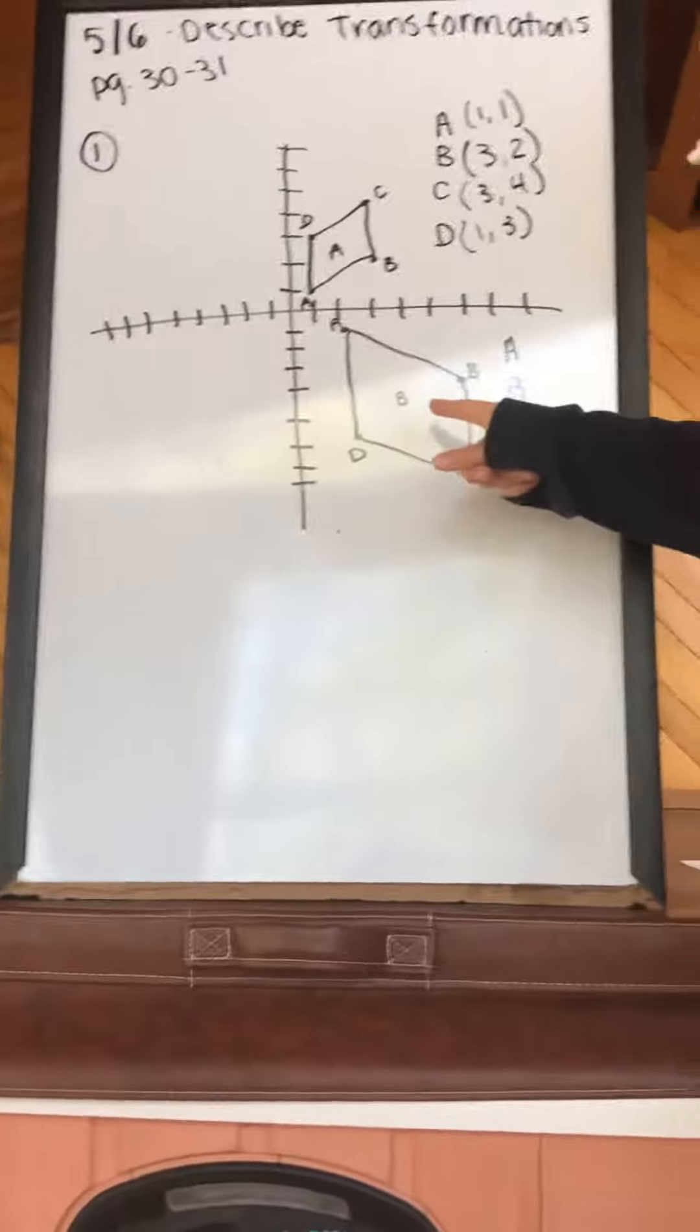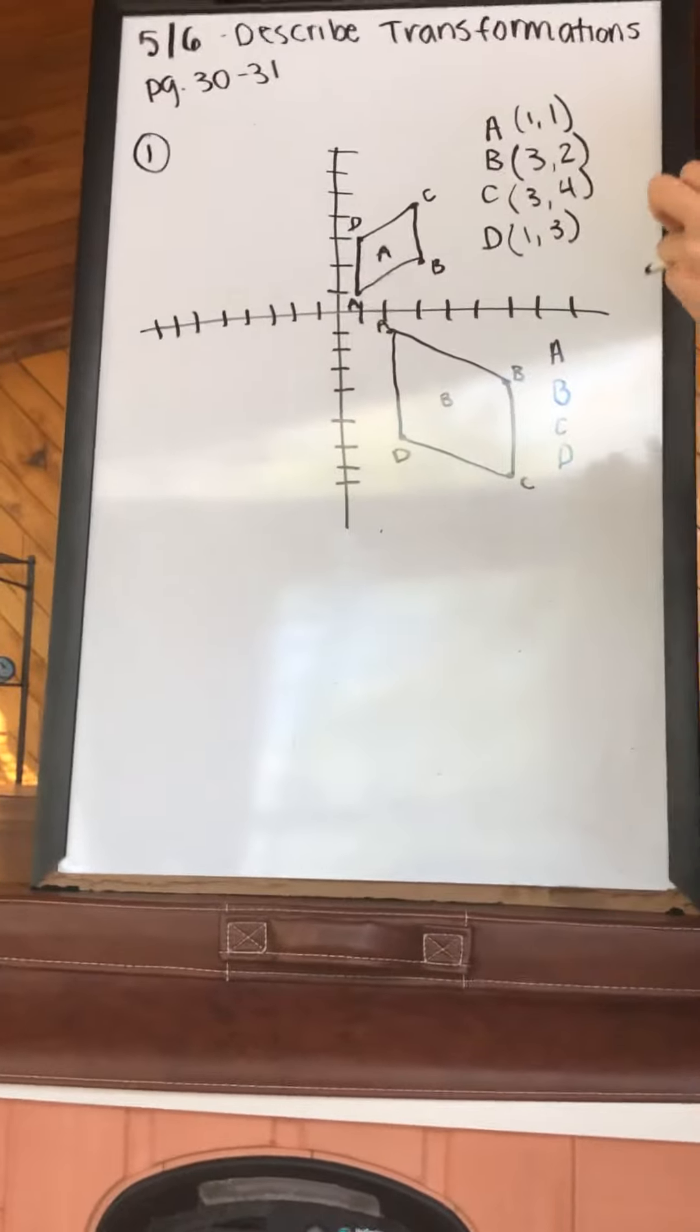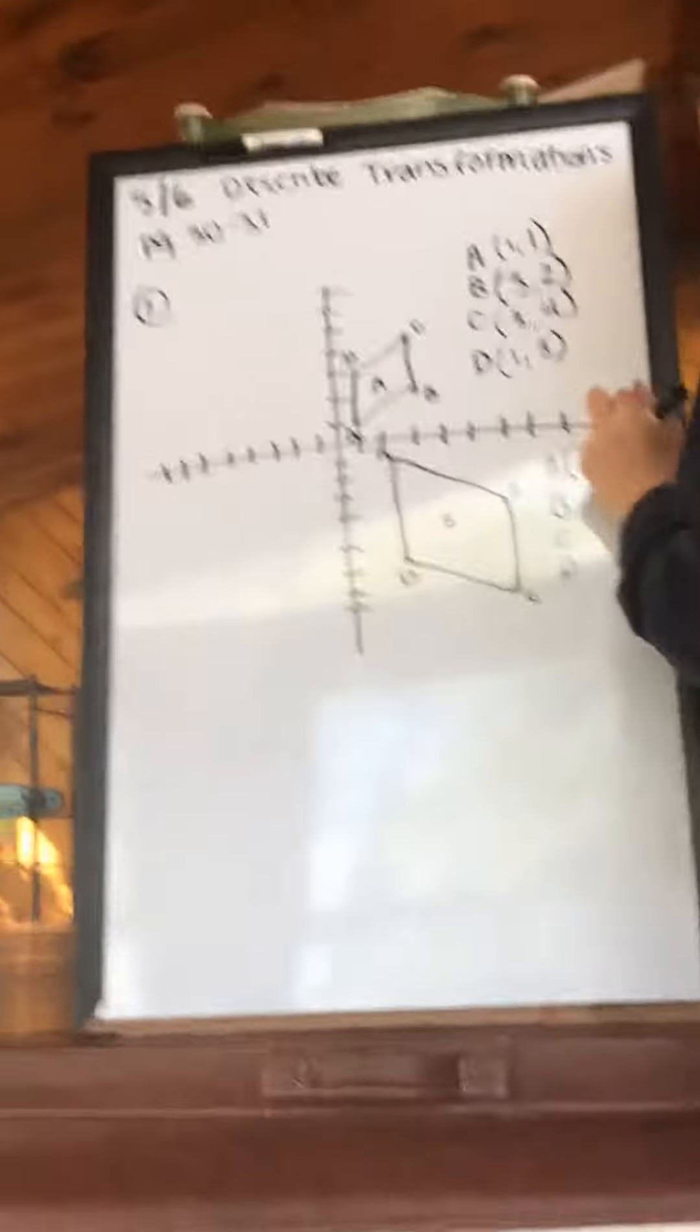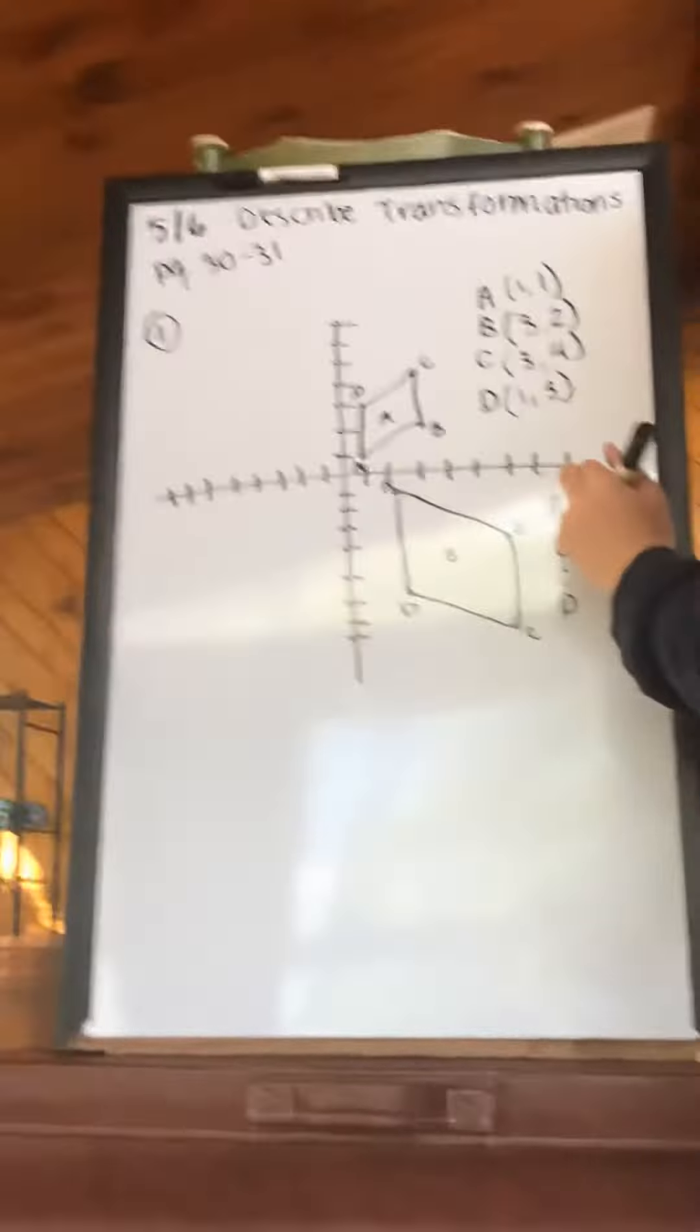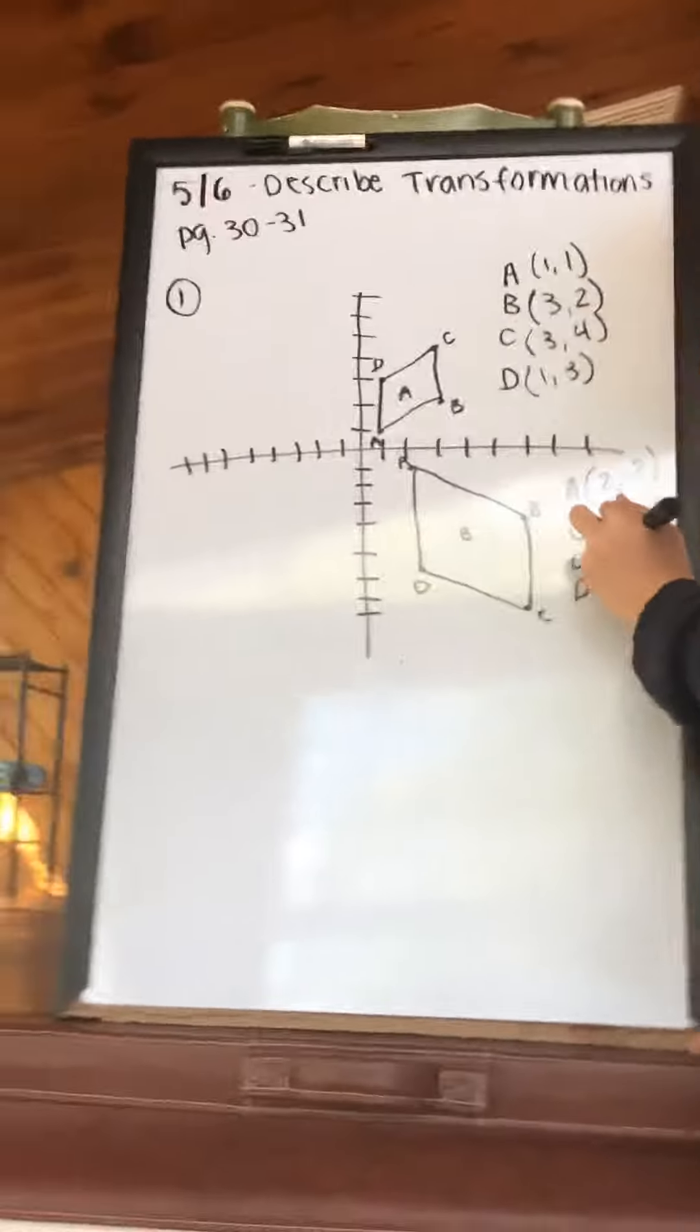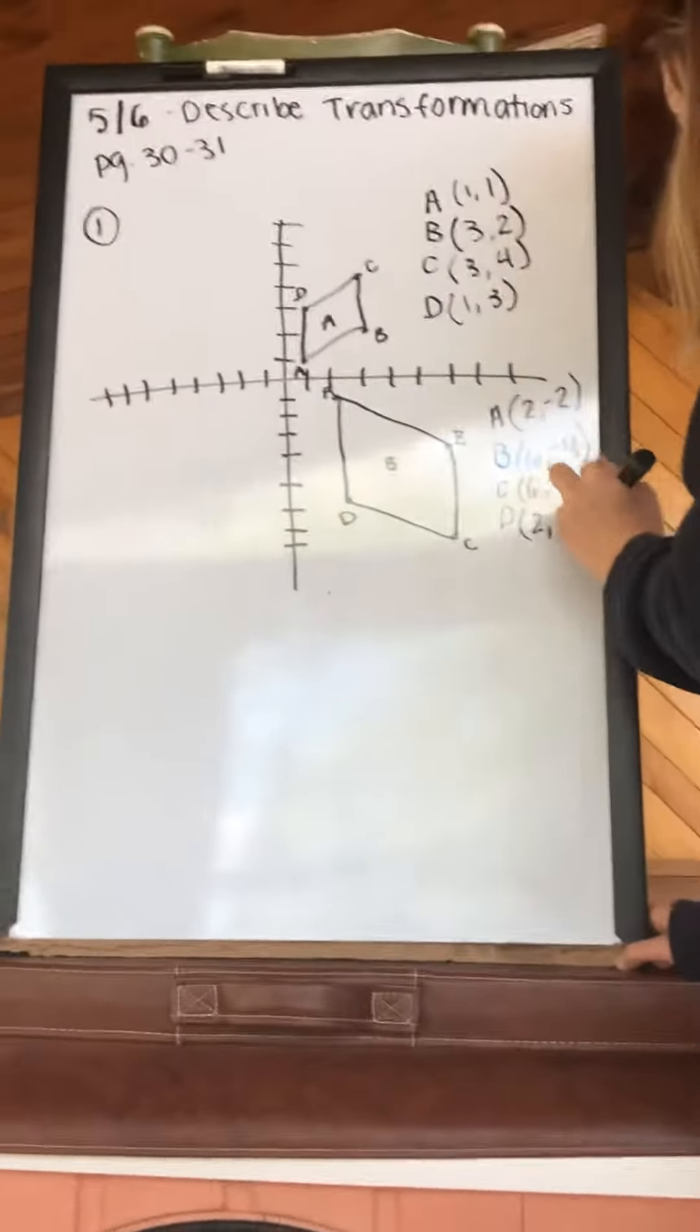Figure B is our new figure. Again, I went through and labeled the points A, B, C, and D. A is at (2,2), B is at (6,4), C is at (6,8), and D is at (2,6).